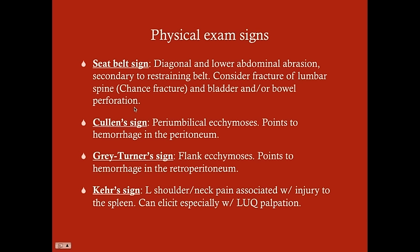A chance fracture is caused by overflexion of the spine. During a crash, inertia pushes you forward while the restraint holds part of your body, causing the mobile (unrestrained) portion to continue forward. This results in anterior flexion, breaking the spinous process and possibly the vertebral body. In addition to a chance fracture, you should also consider bladder and/or bowel perforation in patients with a seatbelt sign.